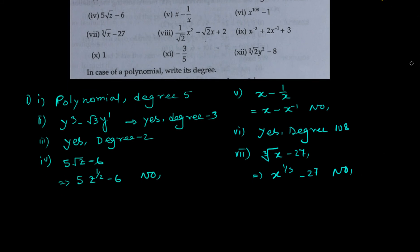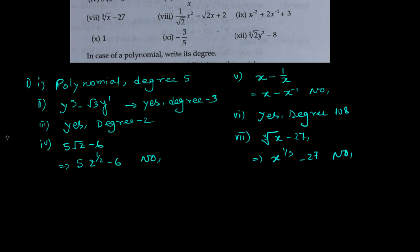The next one is (1 over root 2) times x squared minus root 2 times x plus 2. The root is not over x, so it is a polynomial — the eighth one. The degree will be the highest power of the variable, which in this case is 2.